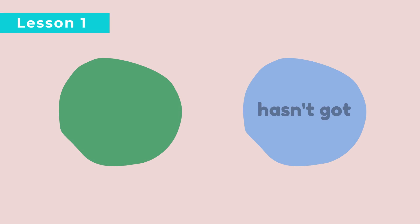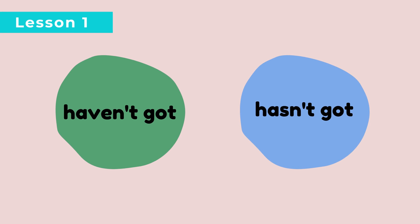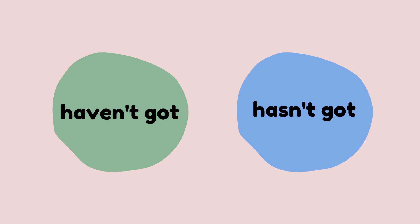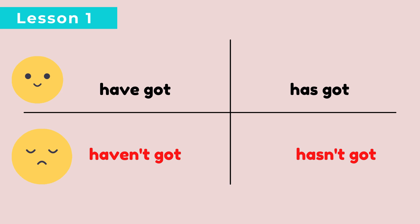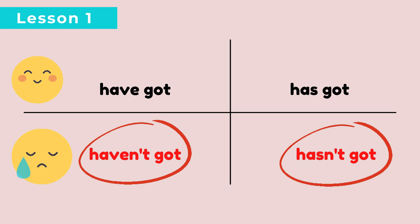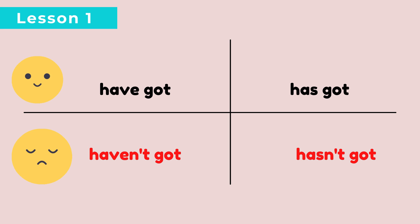For lesson 1, we will learn haven't got and hasn't got. So remember, before this we have learned have got and has got. Have got and has got bermaksud mempunyai. But haven't got and hasn't got bermaksud tidak mempunyai.